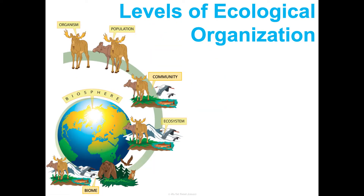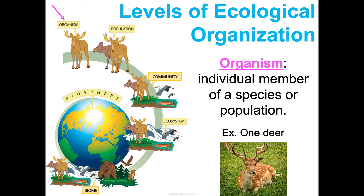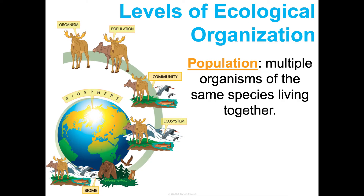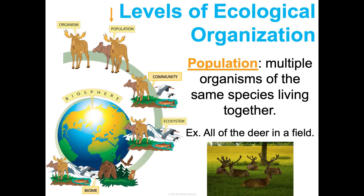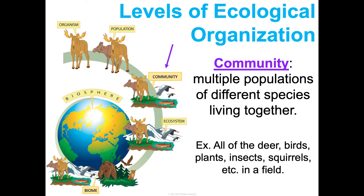An organism is just one living thing — an individual member of a species. For example, one deer is an organism. A population is a group of organisms of the same species living together in the same place — for example, all the deer that live in a particular field. A community is multiple populations of different species living together — so all the deer, birds, plants, insects, squirrels, bacteria, etc. that inhabit that field would be a community.